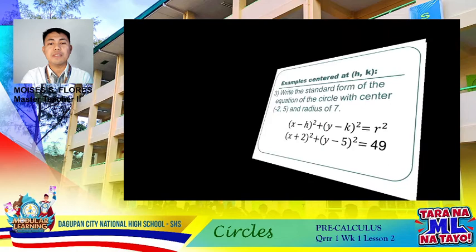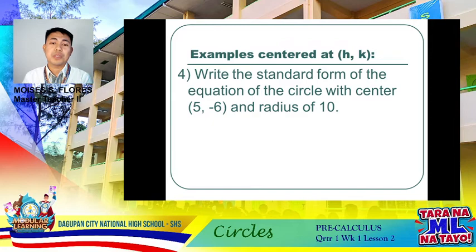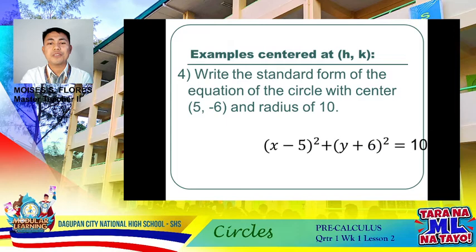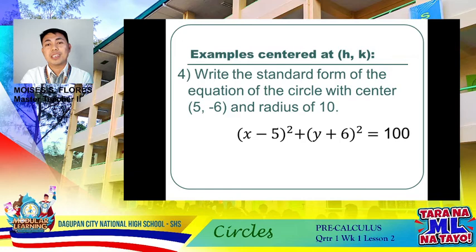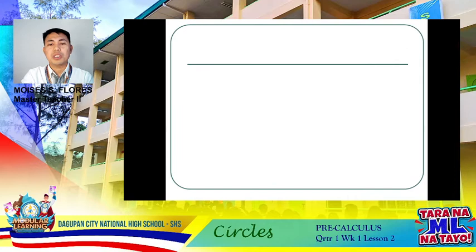Let's have the last example for (h, k). Write the standard form of the equation of a circle with center at (5, −6) and a radius of 10. The answer is (x − 5)² + (y + 6)² = 100. Substitute the values of h and k, consider the signs, and square the radius value.